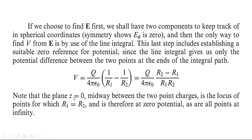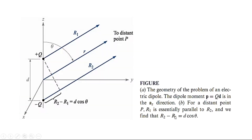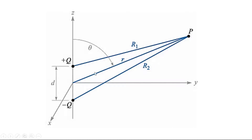The plane z = 0, midway between the two charges, is the locus of points for which R₁ = R₂ and is therefore at zero potential, as are all points at infinity. If we take a point along the y-axis, R₁ will equal R₂ and the potential will be zero. So the y-axis is the locus of all points at which the potential equals zero, and we can consider the y-plane as the plane of zero reference for potential.